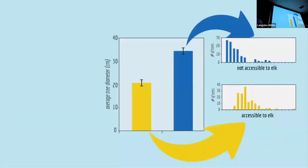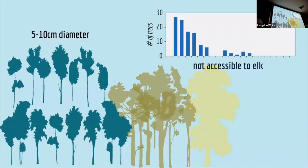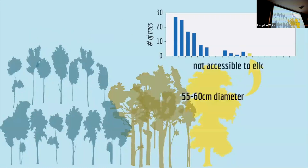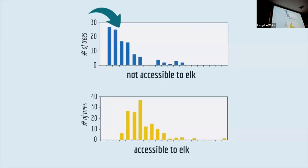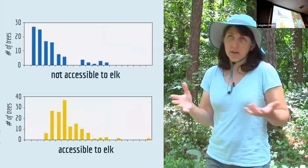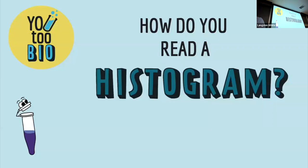The histograms showed that at the site where elk could not go, there were lots of trees with small diameters; but at the site where elk could go, there were far fewer small trees. This data supported the conclusion that young cottonwood trees were not growing in Yellowstone because they were being eaten by elk. In 1996, wolves were reintroduced, the elk population went down, and the young cottonwood population went back up.